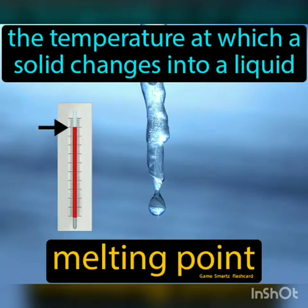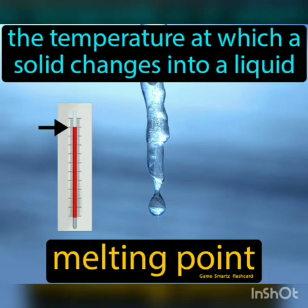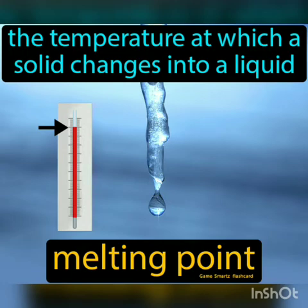Let's begin with melting point. The temperature at which a solid changes into liquid is called its melting point. Each solid has its own melting point — each solid melts at a different temperature. For example, ice melts at zero degrees Celsius. When you remove ice cubes from the freezer and keep them on the table, they will start melting at zero degrees Celsius, because the temperature outside the freezer is above zero degrees Celsius.